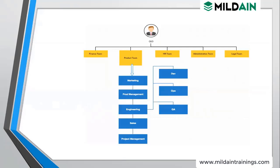We check their pain areas, and after identifying pain areas we present our recommendations for how to implement DevOps in their ecosystem — what changes are required and what tools will be used. Before implementing, we need a green signal from customer management — whether the customer is ready to use new tools, existing tools, or a combination, because some customers are not ready to invest more.